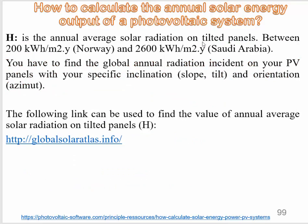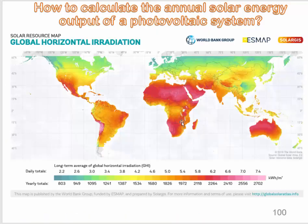H is the annual average solar radiation on tilted panels. It ranges from about 200 kWh per square meter per year in Norway, up to about 2600 kWh per square meter per year in Saudi Arabia. To find the value of H for a given location, we can use the reference link or the solar radiation map provided.